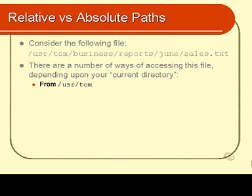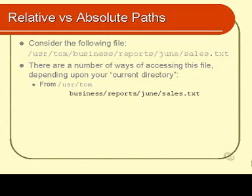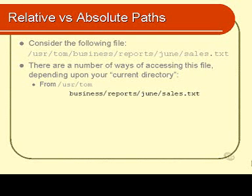If you were in the /user/tom directory — in other words, if your current directory was /user/tom — then what would you type to get sales.txt? Well, you'd simply type in business/report/dune/sales.txt. You need to specify every subdirectory underneath the current one. Notice that the file path you're specifying does not begin with a slash.